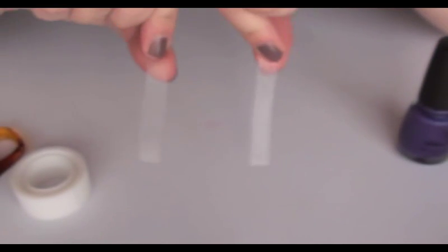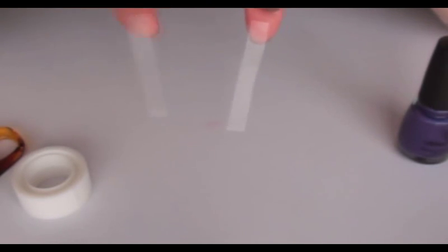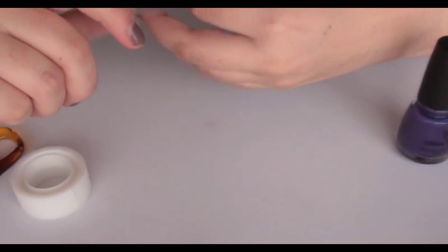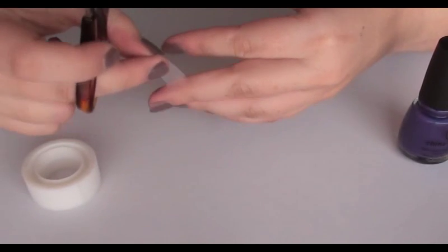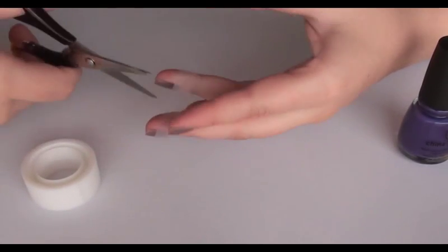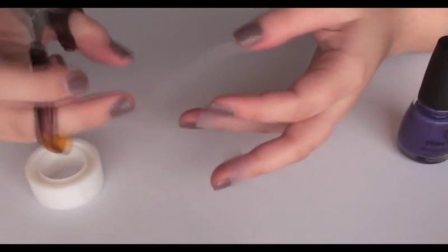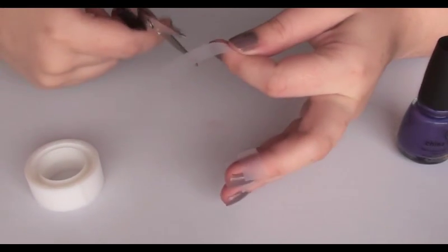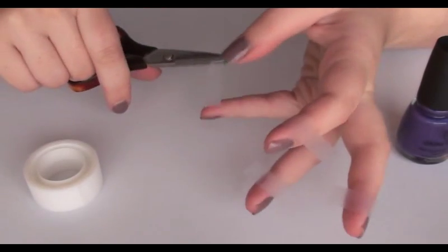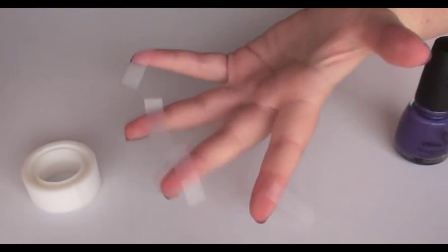And then that is going to give you 2 strips. Now with these strips, that's going to be enough to do 2 nails. So what you do is about halfway down one of those strips, you cut. And then you just do the same on the other. And you've got 4 pieces of tape.